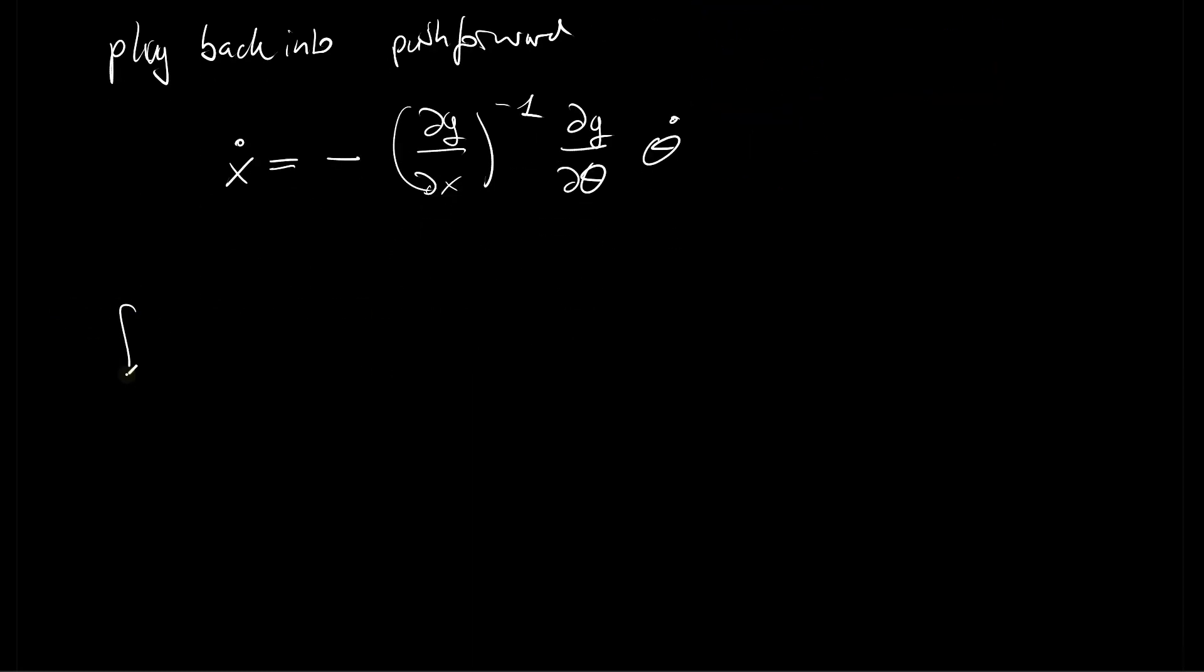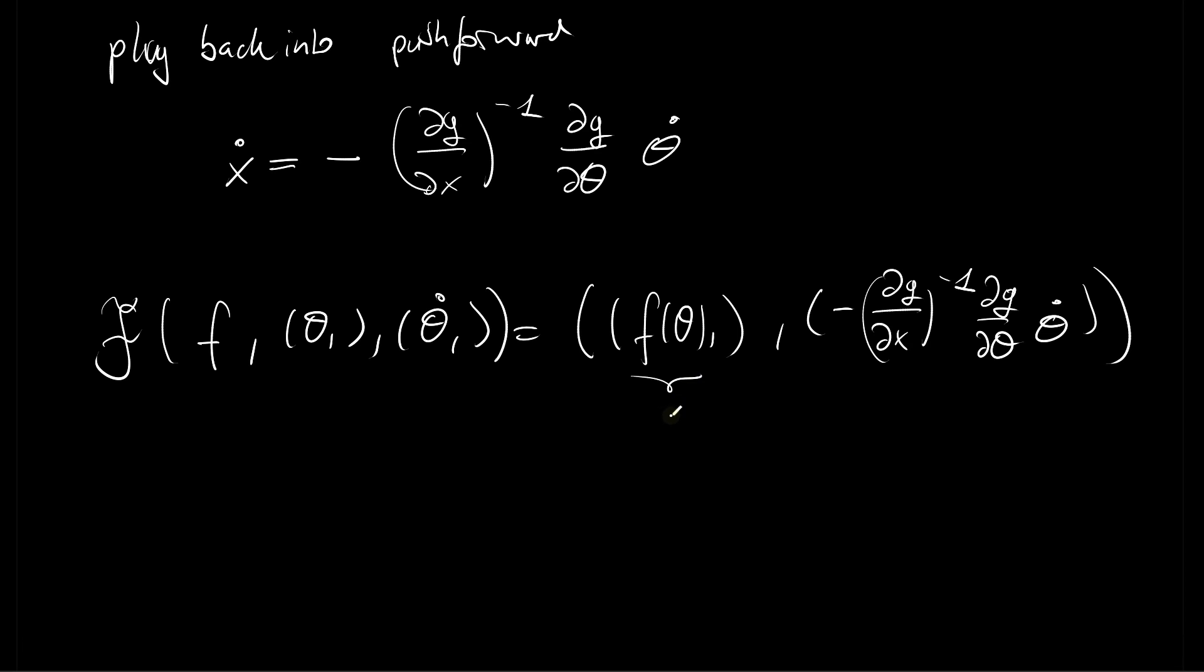So in total, we can write down the pushforward operation on our rootfinding wrapper given the primal input theta as well as some tangent information on the input as first the solution to the rootfinding problem and then the propagation given by minus dg by dx to the minus 1 and dg by d theta multiplied with theta dot. And then we see here, this is our x and this is our x dot.